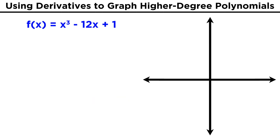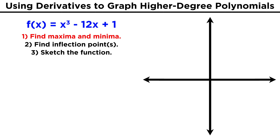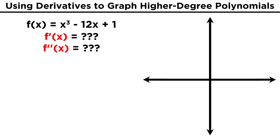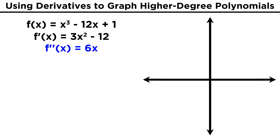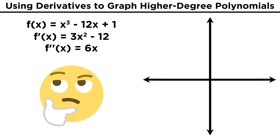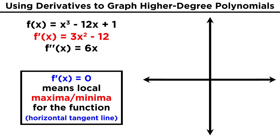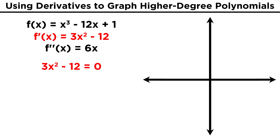Let's put this all together with an example. Say we have the function x³ minus 12x plus 1. Let's find any local maxima and minima, any points of inflection, and then sketch the function. We'll find the first and second derivatives: the first derivative is 3x² minus 12, and the second derivative is 6x. Finding the zeros of the first derivative gives us maxima and minima — these are points where the tangent line has a slope of zero. Setting 3x² minus 12 equal to zero, we add 12, divide by 3, and take the square root to get x equals plus or minus 2.